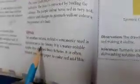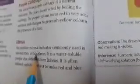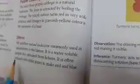What is litmus? Yet another natural indicator commonly used in laboratory is litmus. It is a water-soluble purple dye obtained from lichen. It is often infused into filter paper to make red and blue litmus paper.